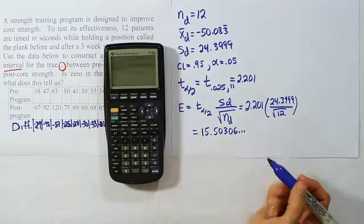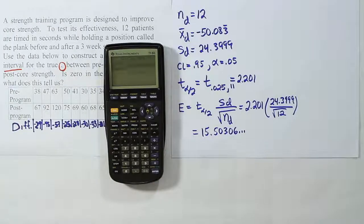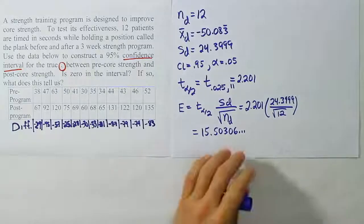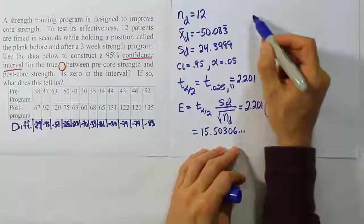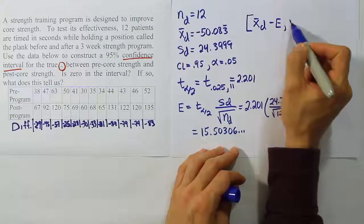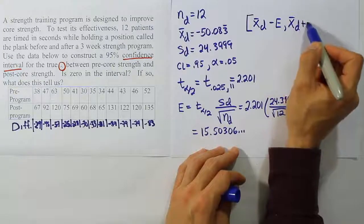Okay, now in the next step, we're going to plug that margin of error into our standard formula: X bar D minus the error, comma, X bar D plus the error.